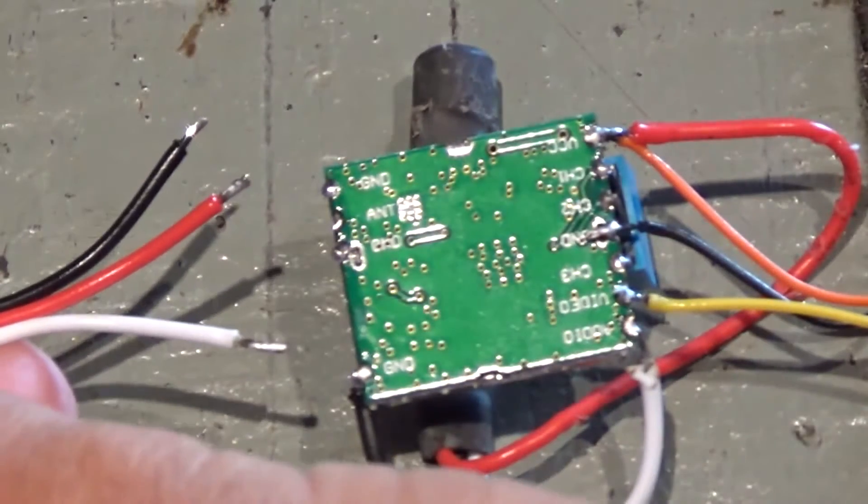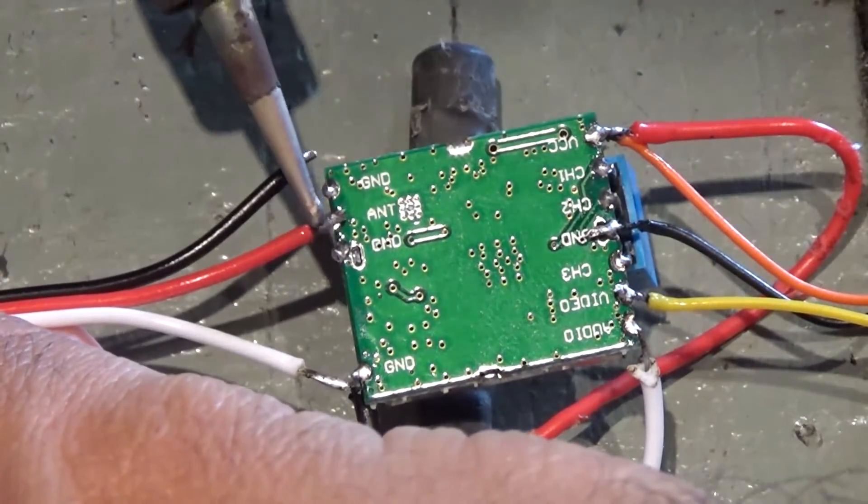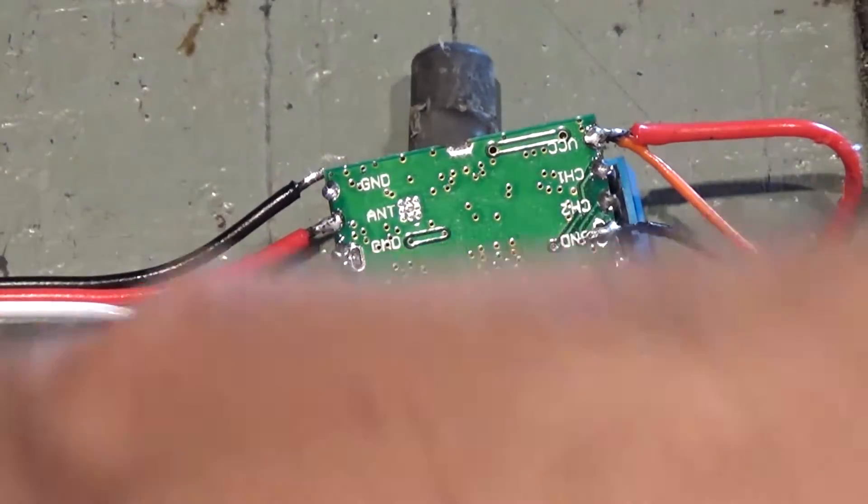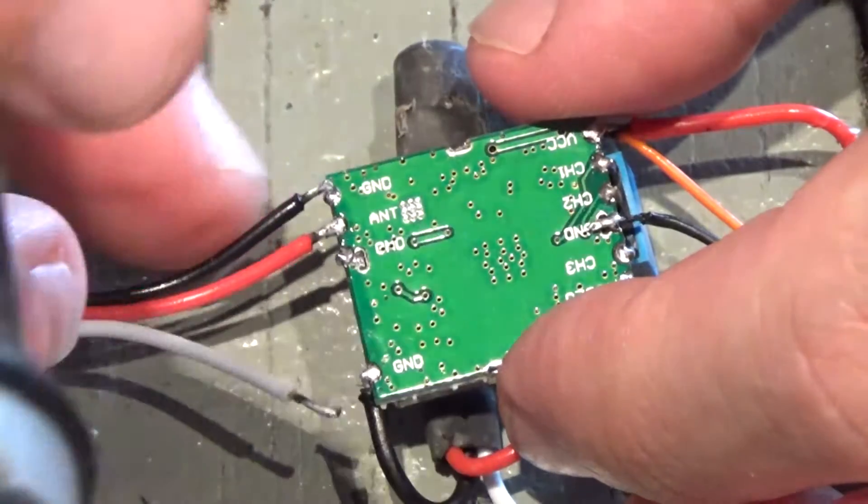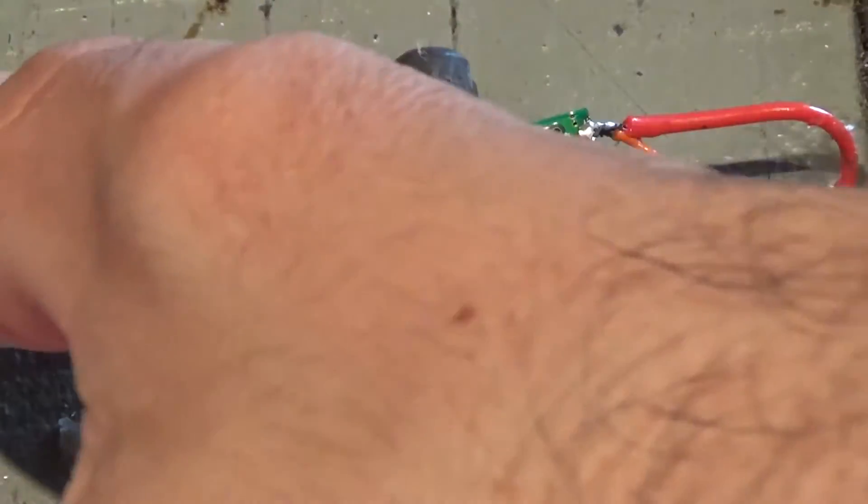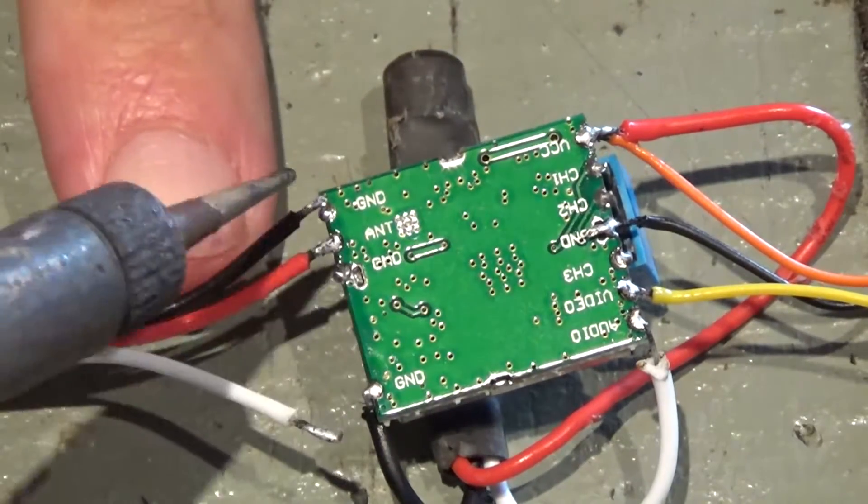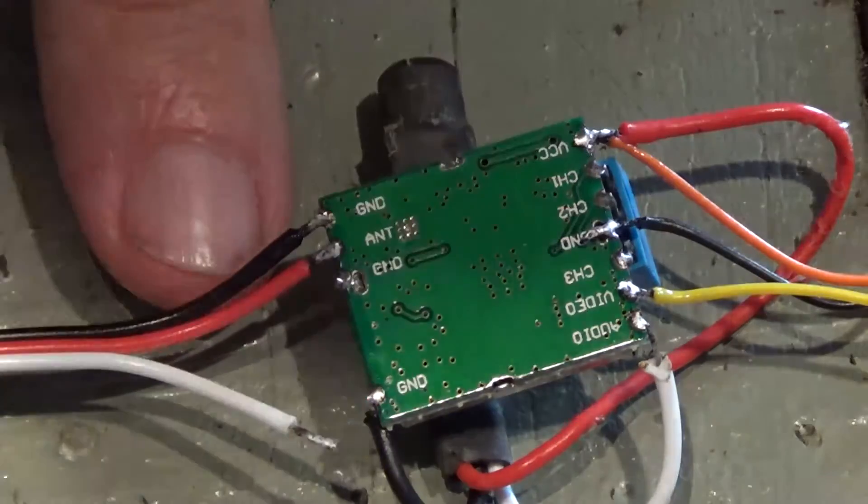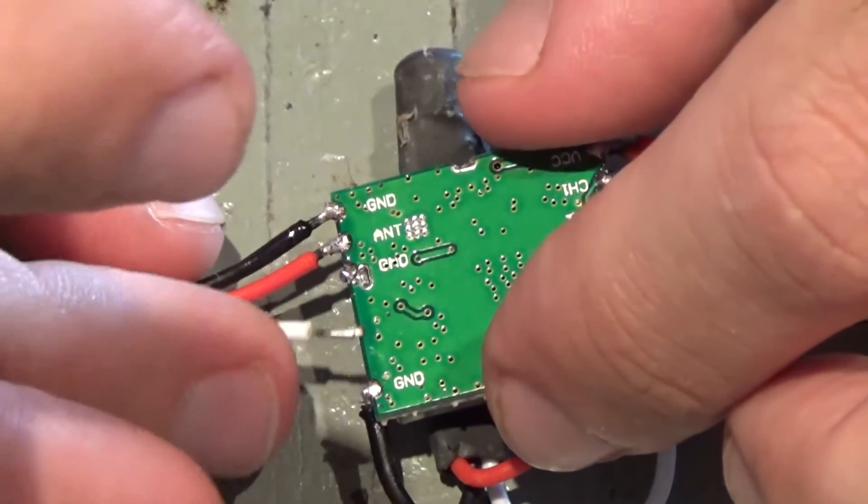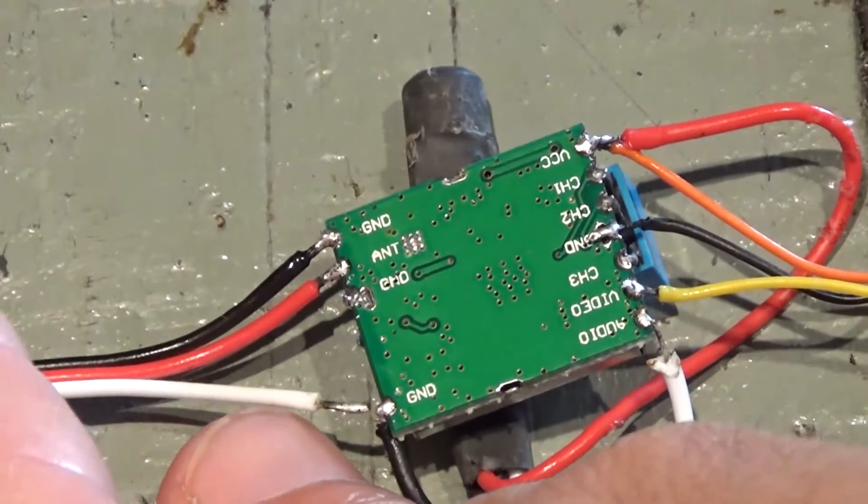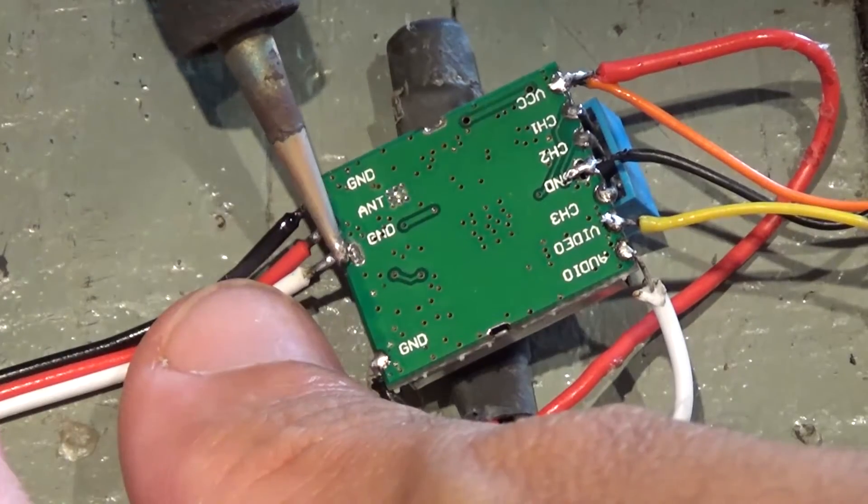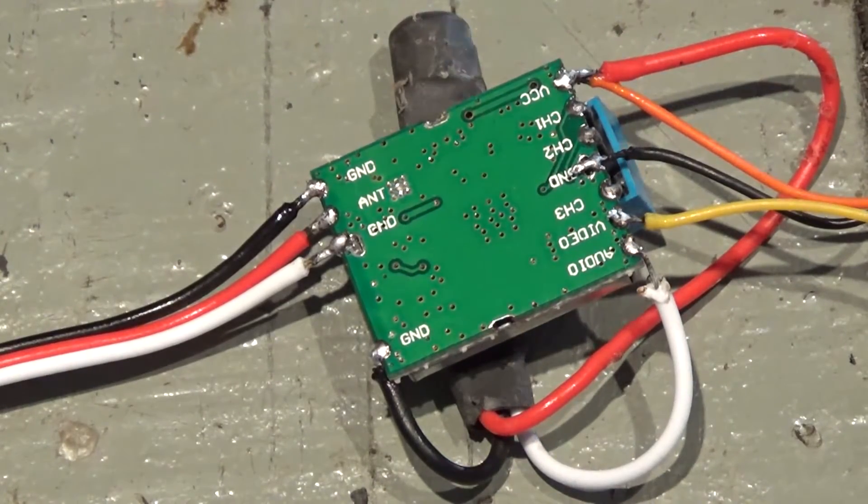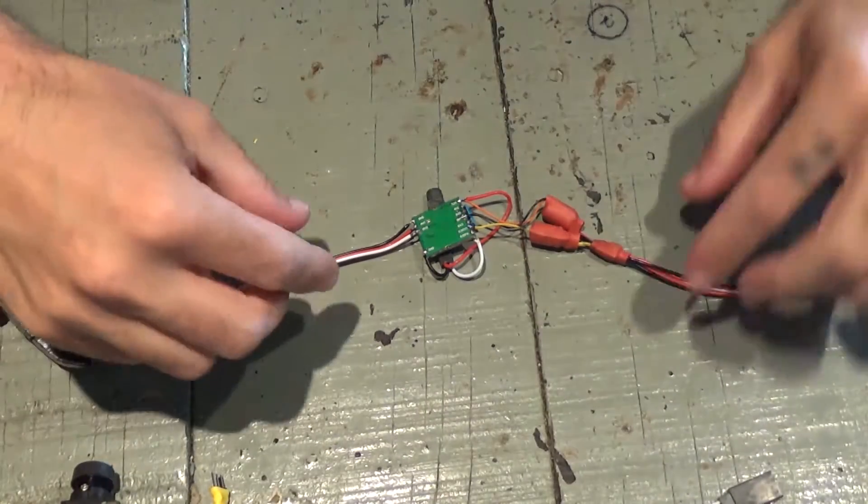Now, these three are gonna go here, for the antenna. Middle pin to middle pin, then black and red will go one on each side, and I'll have the three pins connected to plug the antenna in place. And this way, this is pretty much done.